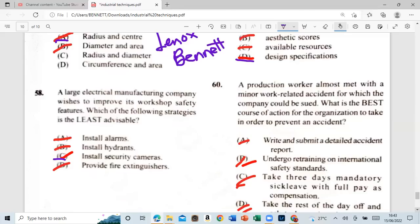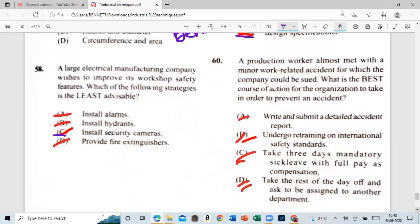Almost met with a minor work related accident for which the company would be sued. What is the best course of action from the organization taking order to prevent an accident? A: write down. Write down. Submit detail accident report. B: undergo. Retreading on international safety standards. Three. Three. Take three days. Monday to receive. With full pay. As compensation. Somebody. I like. It's not the answer. But it's the best one. Take three days. Monday to receive. With full pay. As compensation. Full. All right. D: take the rest of the day off and ask to be assigned to another department. No. You can't check your notes. So. So that would be undergo training, international safety standard. Notice the word international. All right. Guys. We have made it to the end. Thank you guys. If you have not subscribed, you know. Like the video, you know. Watch the video, you know. All right. Watch about this again. I'm sorry, you know. All right. Guys. See you guys in another video. We are going through this.